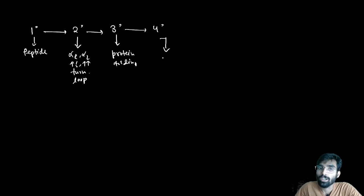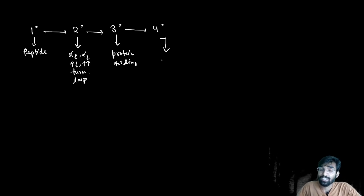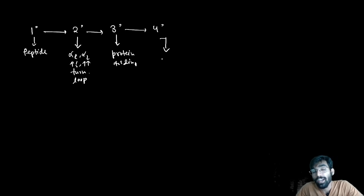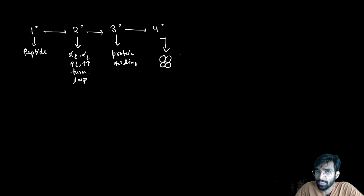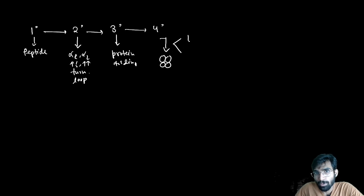In quaternary structure we will talk about how it is achieved and what its role is — why we need the quaternary structure of a particular protein. We'll look at the different kinds of interactions responsible for quaternary structure, and examine hemoglobin and myoglobin. Myoglobin is a monomer, while hemoglobin has a quaternary structure.